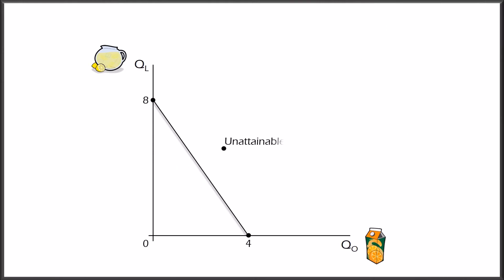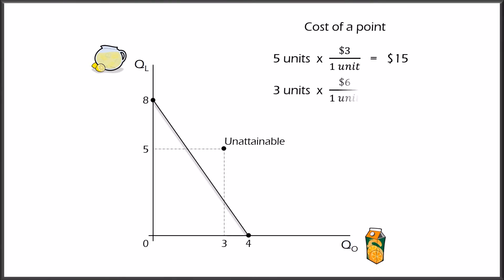Finally, a combination is unattainable if it falls above the CPC — for example, three units of orange juice and five units of lemonade. Five units of lemonade at $3 each cost $15, while three units of orange juice at $6 each cost $18, totaling $33, which is higher than the budget of $24.